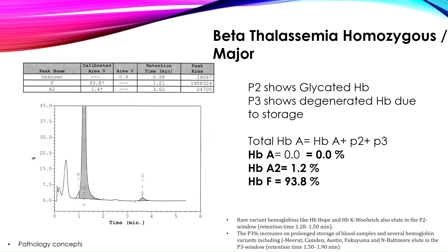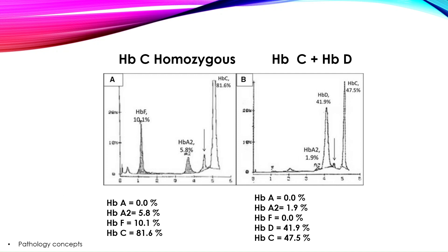In HbC homozygous, the percentage of hemoglobin C is 81.6%, HbA2 is 5.8%, and HbF is 10.1% — consistent with HbC homozygous. In HbC plus HbD compound heterozygous, we can find both types of hemoglobin at approximately 50% each.